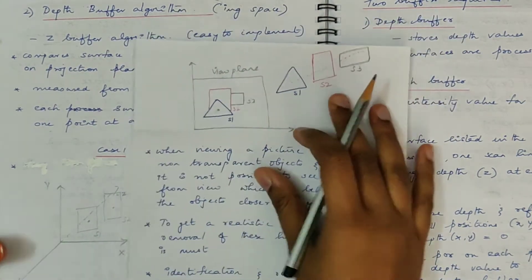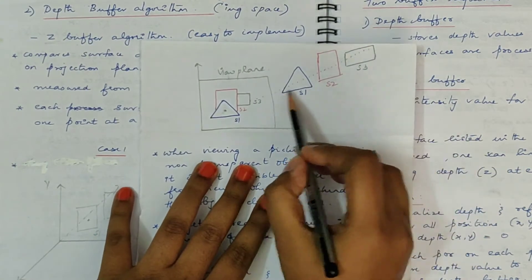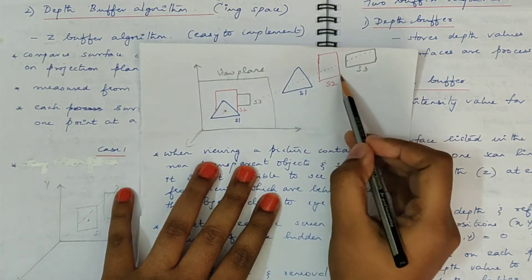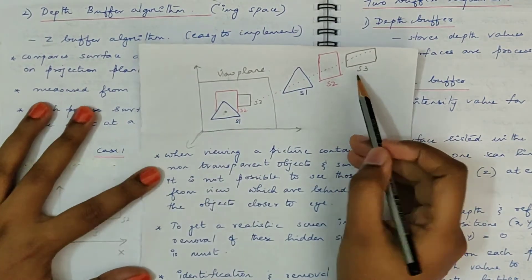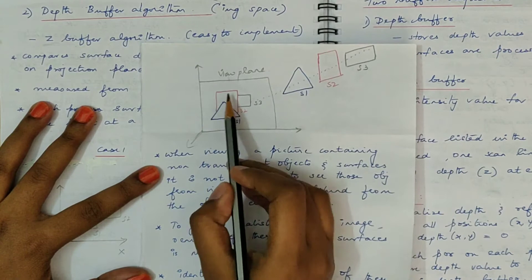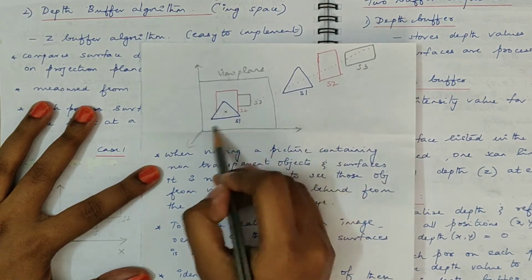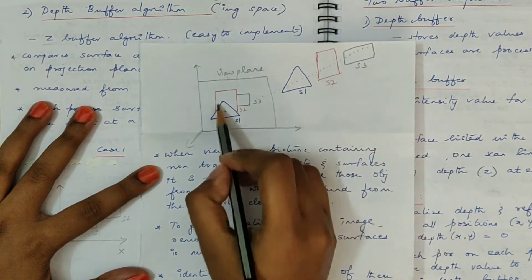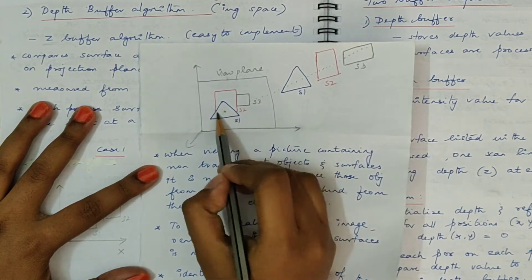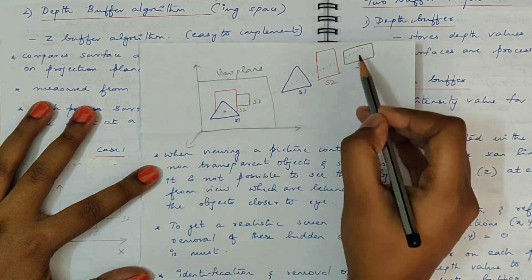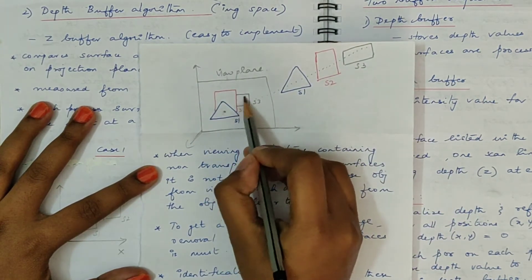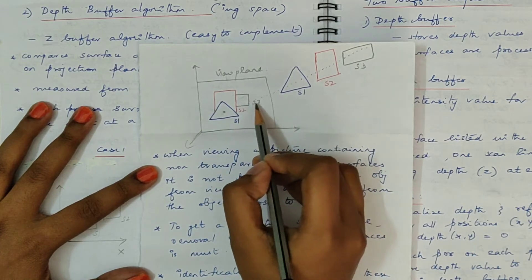If you see that here, S1 is closer — you are viewing along the Z axis, so S1 is closer, next comes S2 and S3. If you are trying to process these three images, then the resultant will be something like this: S1 is fully visible, S2 is partially visible — those portions which are behind S1 are not stored. And for S3, the portions which are behind S2 and S1 are not stored; only the non-overlapping part is visible for S3.